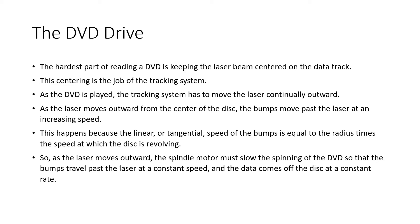The hardest part of reading a DVD is keeping the laser beam centered on the data track — this is the job of the tracking system. As the DVD is played, the tracking system moves the laser continually outward from inside to outside. As the laser moves outward from the center, the bumps move past the laser at an increasing speed, because the linear speed of bumps equals the radius times the rotational speed. So the spindle motor must slow the spinning of the DVD to keep bumps traveling past the laser at a constant speed, ensuring data comes off the disc at a constant rate.